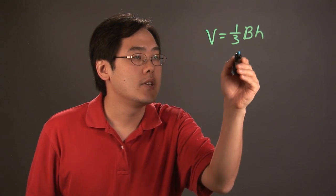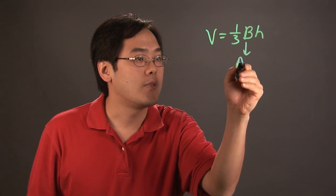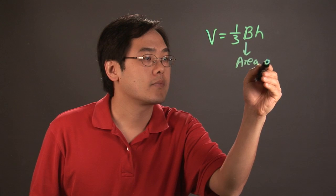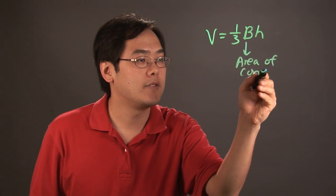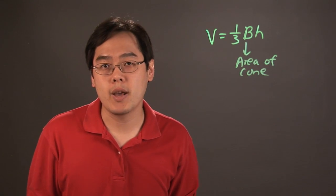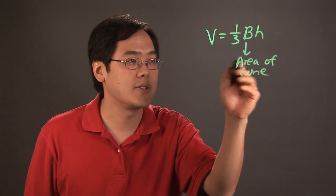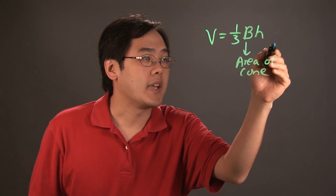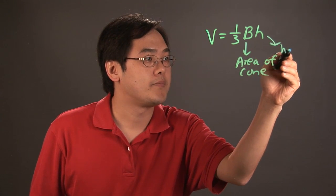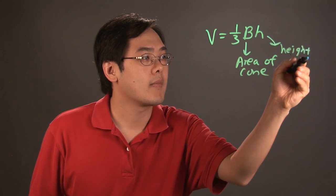Now the B stands for the area of the cone base. You know, when it comes to a cone, we're talking about the area of the base of the cone. And the H stands for the height.